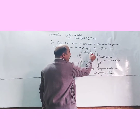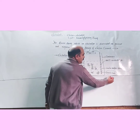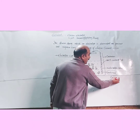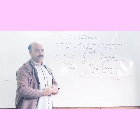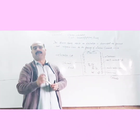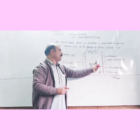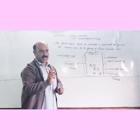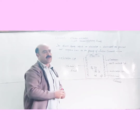The electrode connected to the negative terminal of the battery becomes negatively charged and is called the cathode. These charged metallic plates — one positively charged and one negatively charged — are called electrodes.